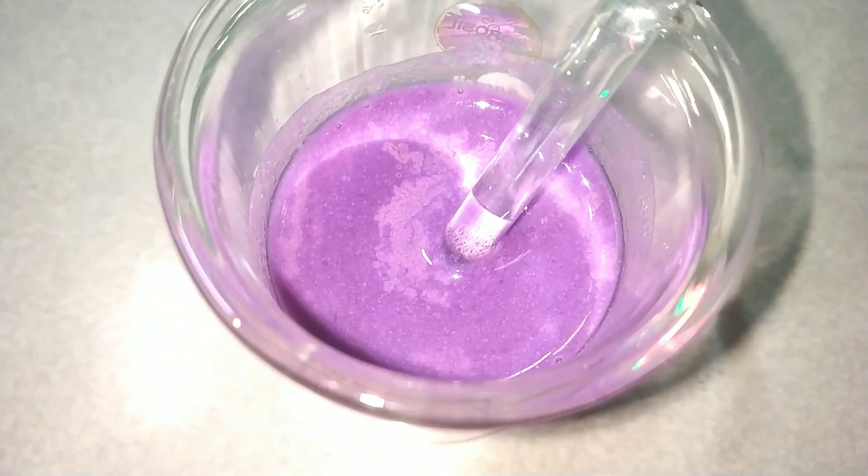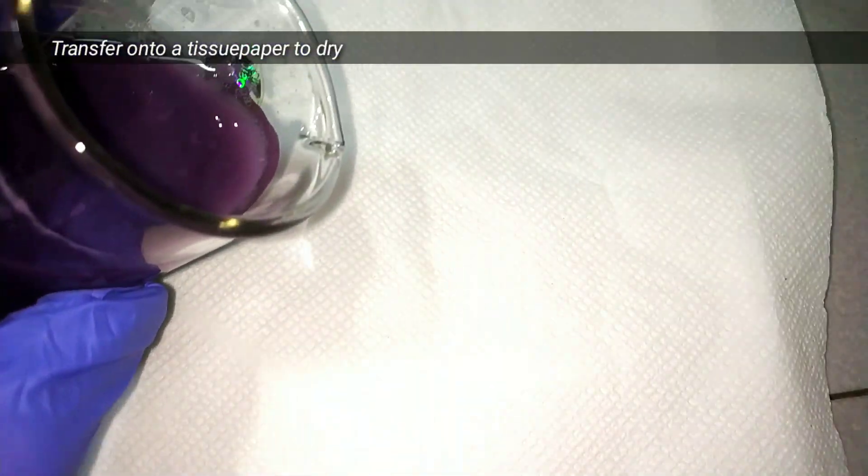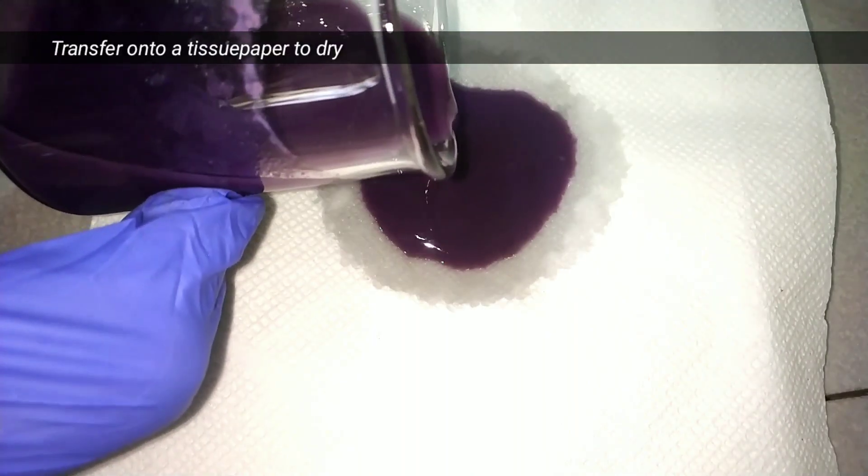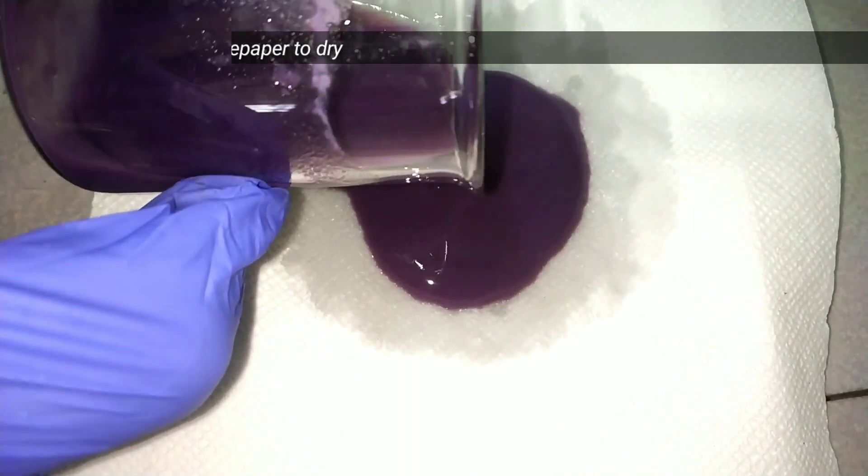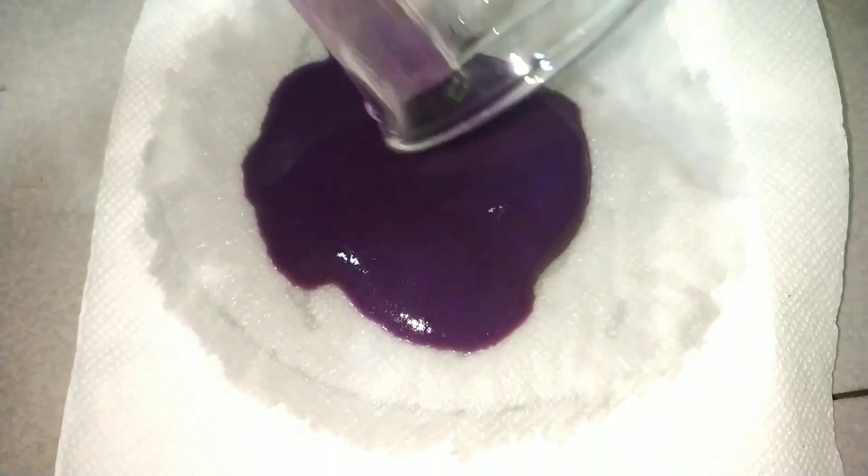Finally you get to see this nice violet color. The next step is to dry them. For that I pour this down onto a tissue paper in order to soak up every water molecule and the precipitate gets dried up eventually. Here you can very well make out the purple color of the precipitate.